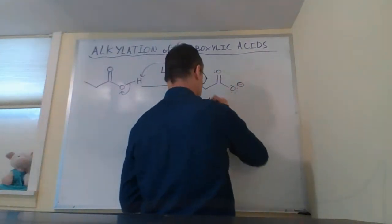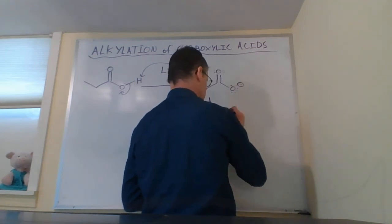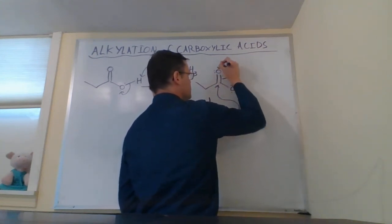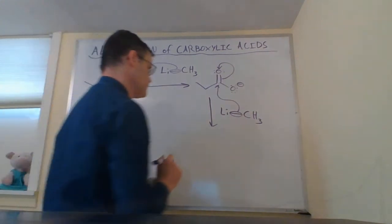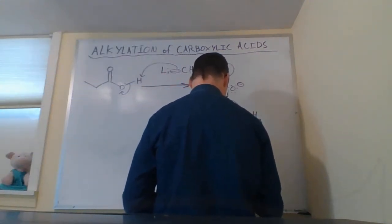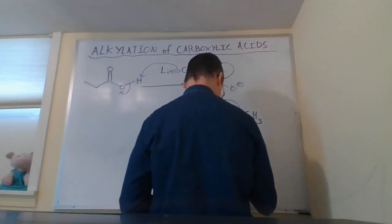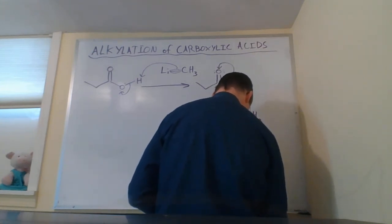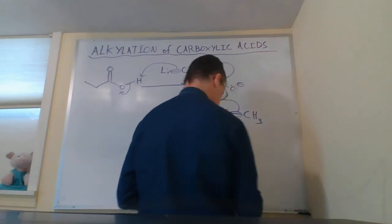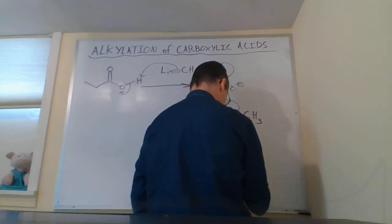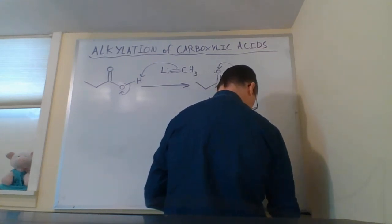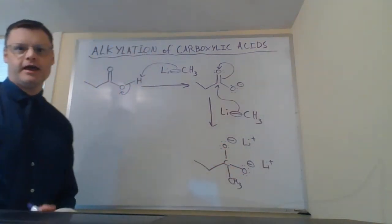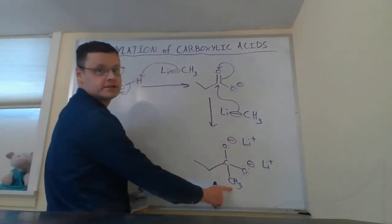Then our second equivalent of methyl lithium enters onto the stage and it's going to do a different elementary mechanistic step — a nucleophilic addition. The result at this point is a di-anion, because we have two negative charges: one on this oxygen and one on that oxygen. And then we have a methyl group added.